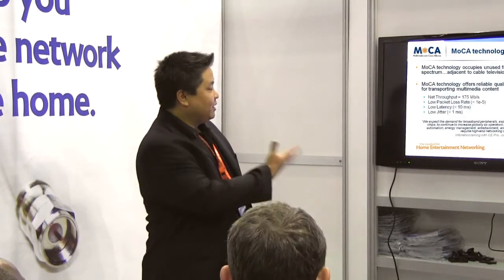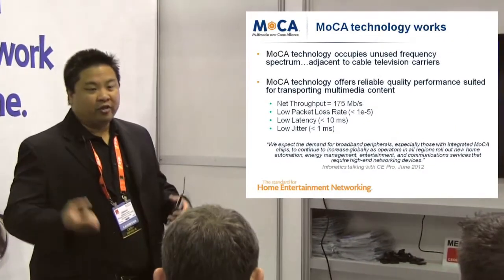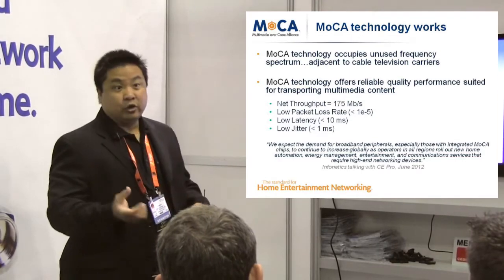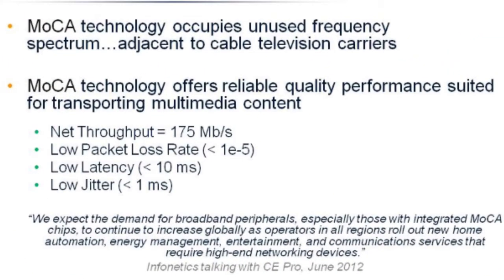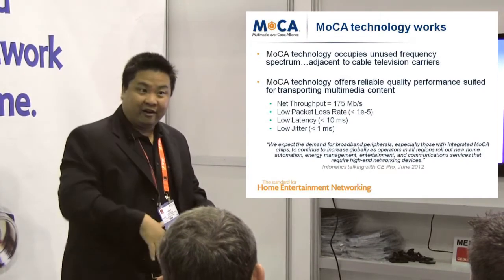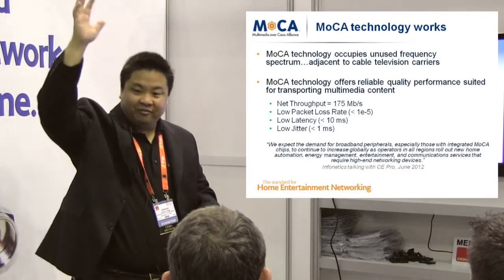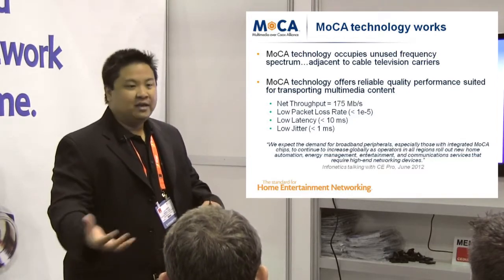MoCA technology occupies the unused frequency spectrum on the coax adjacent to either the cable or satellite signal. In the case of satellite, the broadcast signals are above one gigahertz, so the MoCA signal is positioned below at about 600 megahertz. For cable, the signal is all below one gigahertz, so the MoCA signal is placed above one gigahertz. This means there are two different types of products — one for satellite and one for cable.